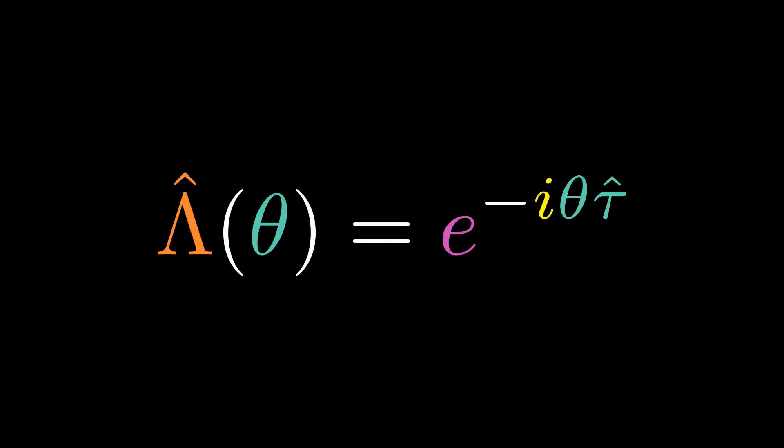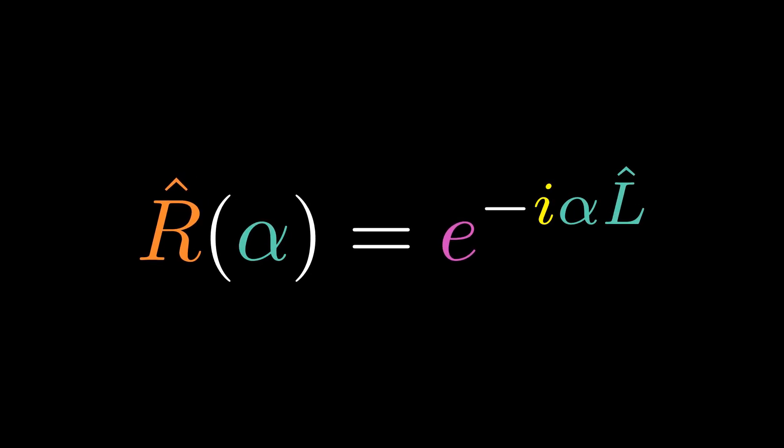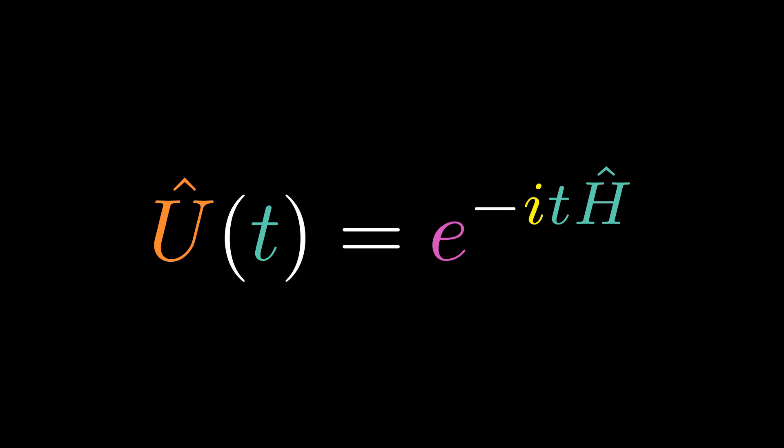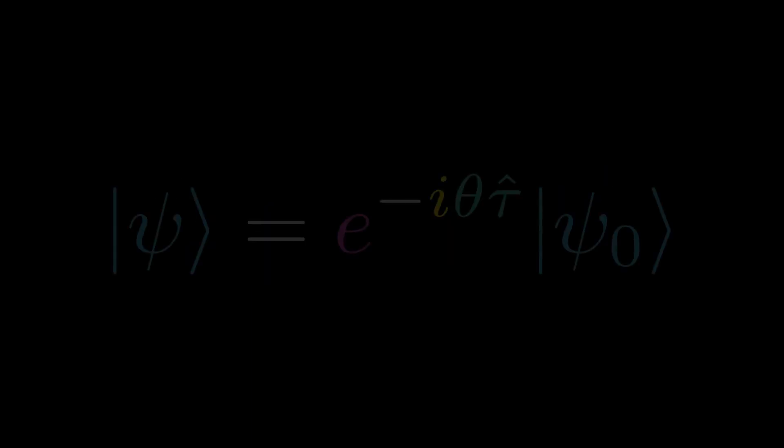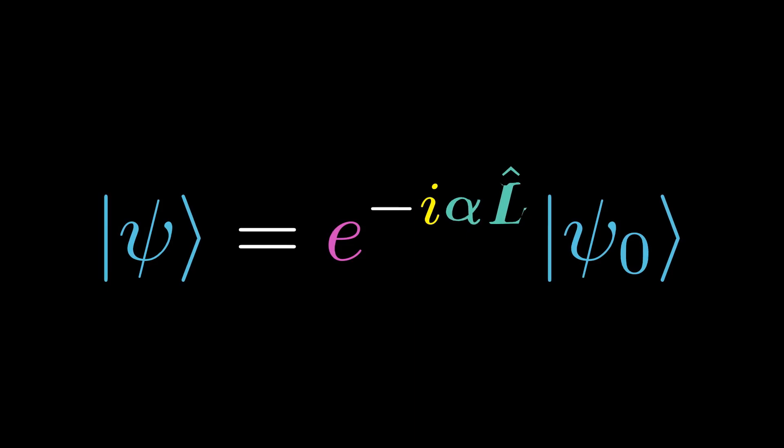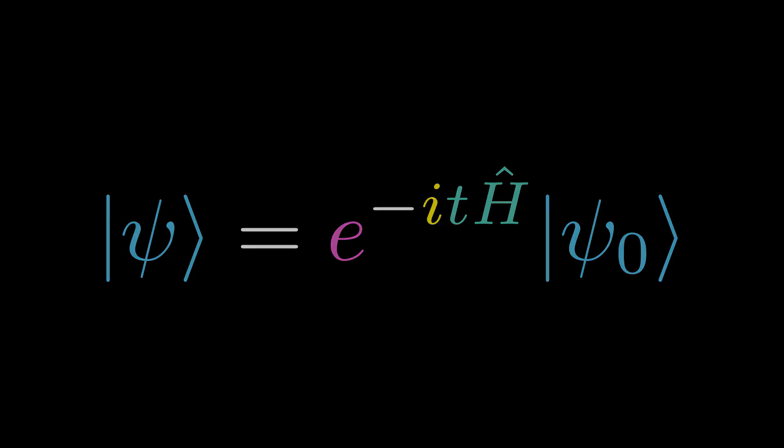The role of these unitary operators has a simple physical interpretation. For example, e to the minus i a p hat is the translation operator. It physically translates our system by distance a. E to the minus i alpha L hat is the rotation operator. It physically rotates our system by angle alpha. E to the minus i t H hat is the time evolution operator. It evolves our system forward in time. Allowing this to act on an initial state solves the Schrödinger equation. So here's the final solution of the master equation and the specific solutions. Thank you for watching.